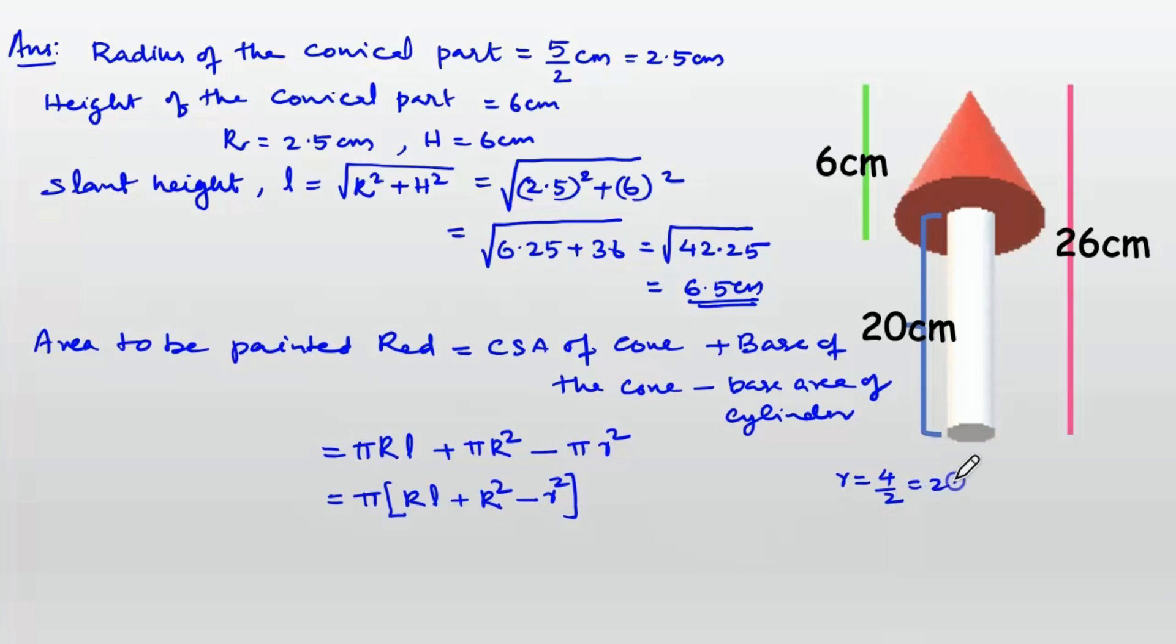Small r is the radius of the cylinder, r equals 4/2 equals 2 cm.